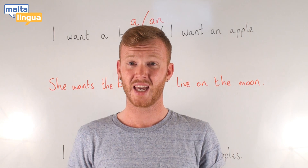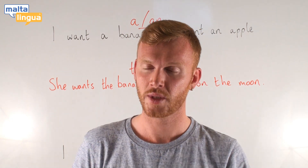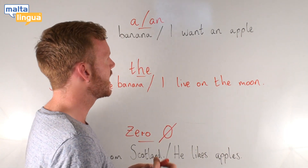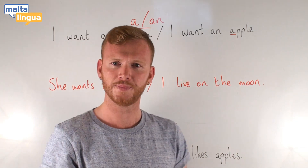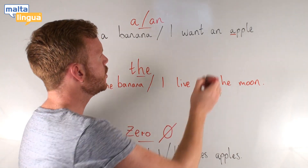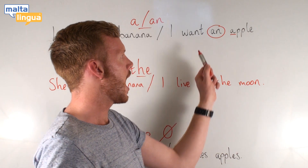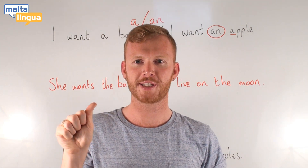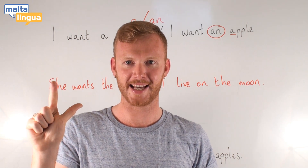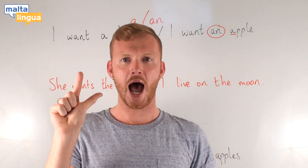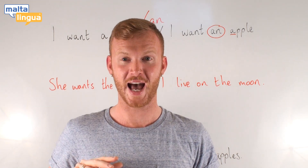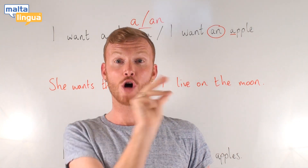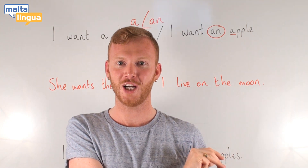So why do we use 'a' and why do we use 'an'? What is the difference? The difference is very simple. When the word following the article begins with a vowel, we use 'an'. I want an apple — A. I want an elephant as a pet — E. I want an iguana as a pet — I. I want an octopus for dinner — O.